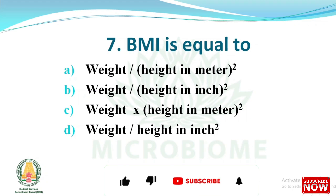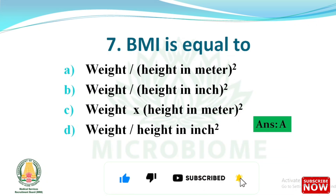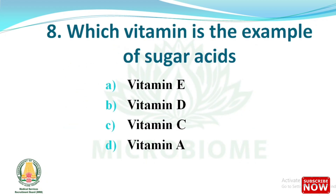Next question: BMI is equal to what? The right answer is option A, weight divided by height in meters squared. BMI is body mass index; it is a measure of body size that combines a person's weight with their height. Next question: which vitamin is an example of sugar acids? The options are vitamin E, vitamin D, vitamin C, and vitamin A. The right answer is option C, vitamin C.